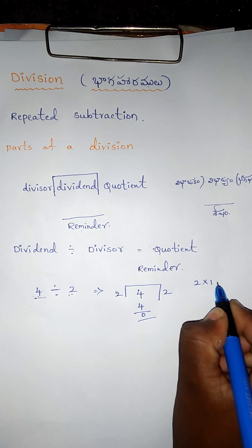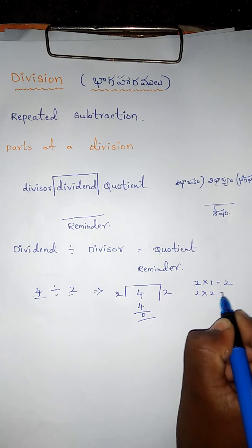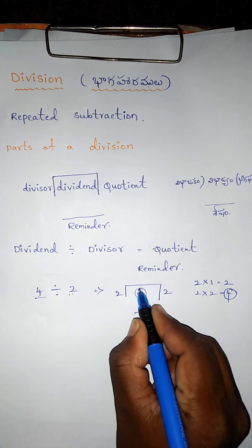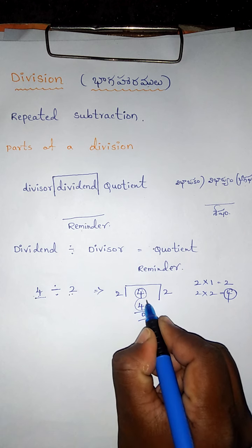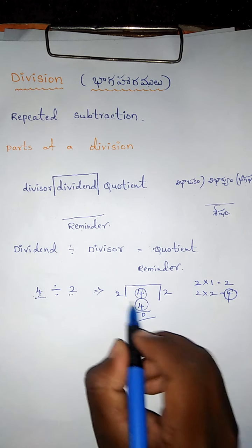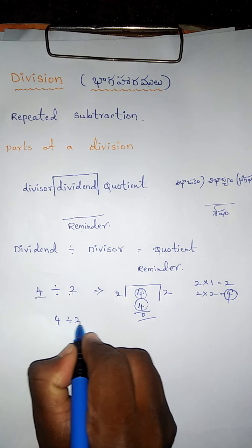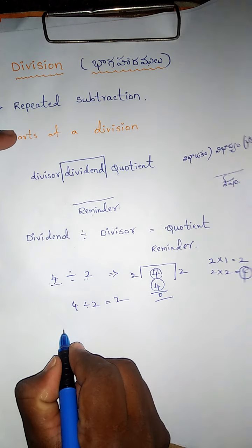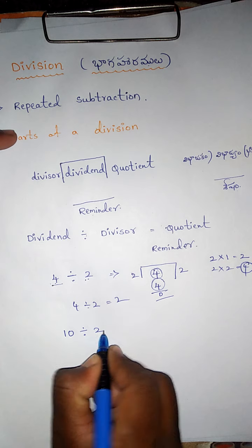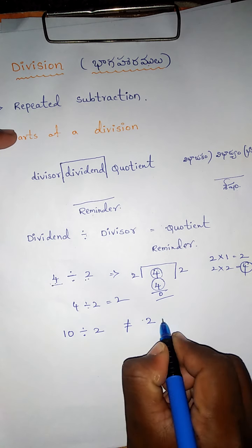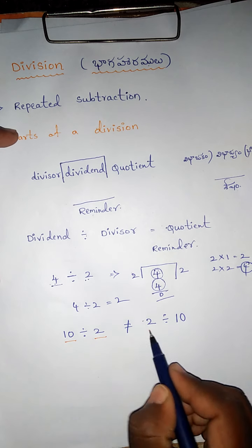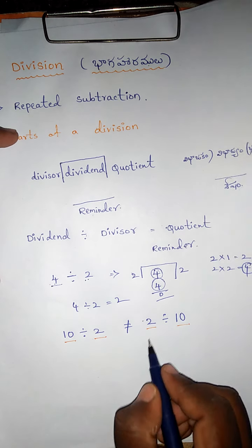For example, two ones are two, two twos are four. So dividend four divided by two. The answer is four divided by two is equal to two. But ten divided by two is not equal to two divided by ten. Division is not commutative - order matters.